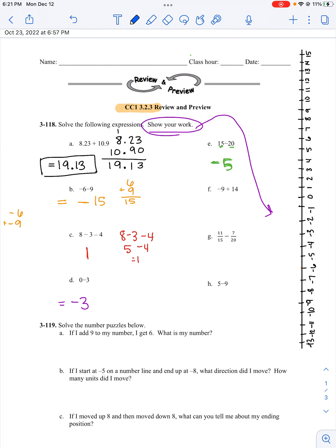Part F: Find negative 9 and add 14. 1, 2, 3, 4, 5, 6, 7, 8, 9, 10, 11, 12, 13, 14, which is 5. I could also think of it, well, it's kind of like subtracting 9 from 14. So, 14 minus 9 is 5.